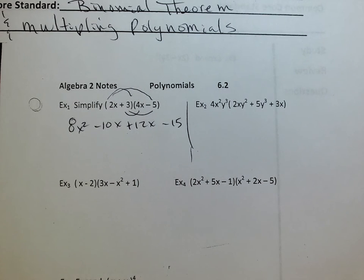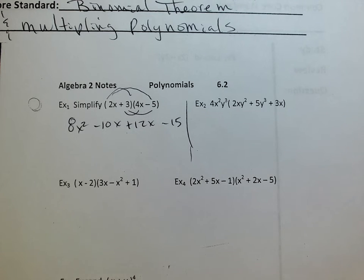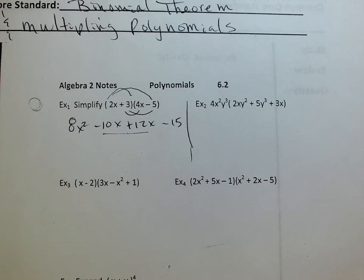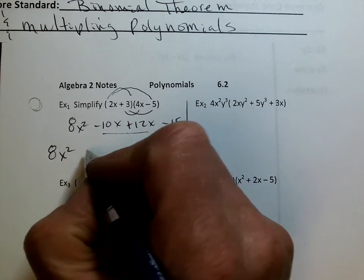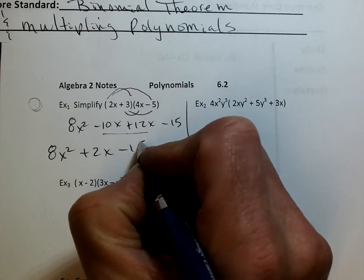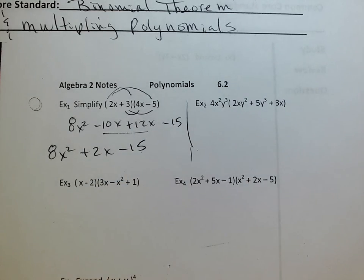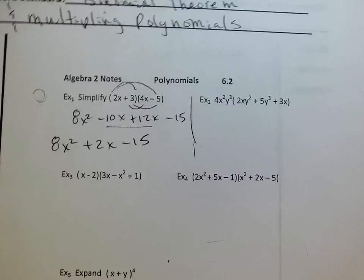I'm just FOILing first, outside, inside, last. Or some people call it double distribute. These two middle terms are the same, so they can be combined. So my grand answer is 8x squared plus 2x minus 15. Easy. Thumbs up, everybody agree. Piece of cake.